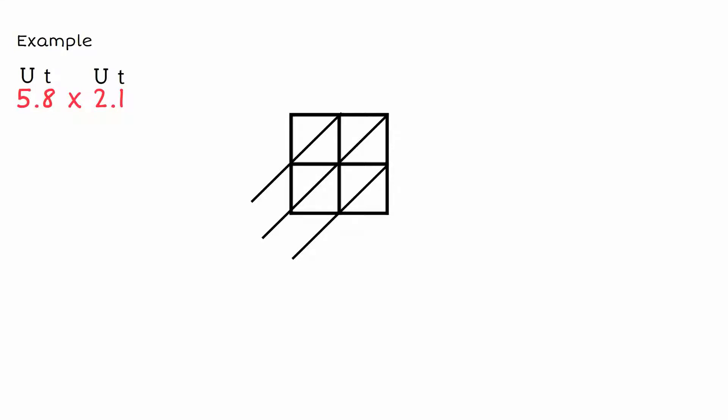Now that we have the grid all set up, we just need to place our numbers in and multiply. So we have 5, 8, 2, and 1.